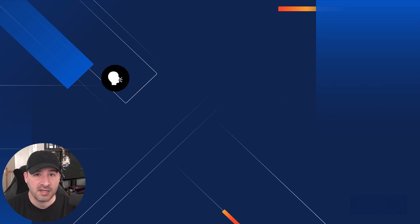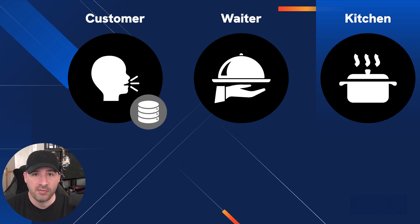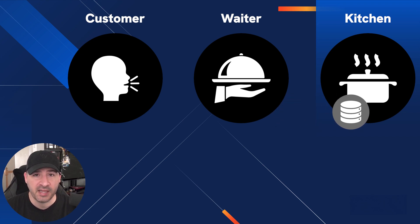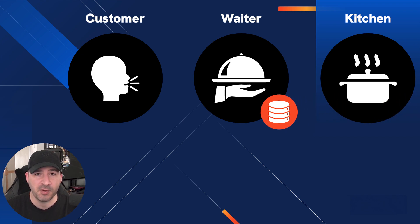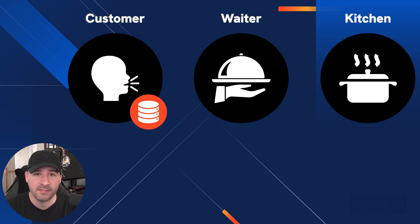A restaurant has a customer, a waiter, and the kitchen. The customer comes in, they look at the menu, and they place an order with the waiter. Let's say they order a cheeseburger. The waiter then takes the specifics of that order to the kitchen, where the kitchen prepares that food. The kitchen then gives that cheeseburger to the waiter, who delivers it to the customer, and everyone's happy.